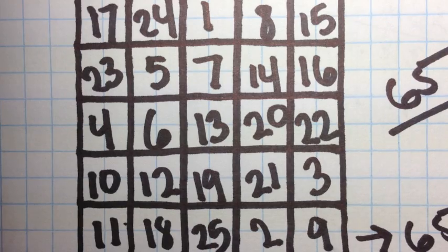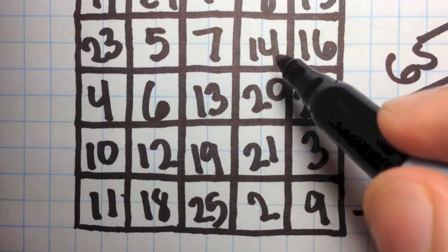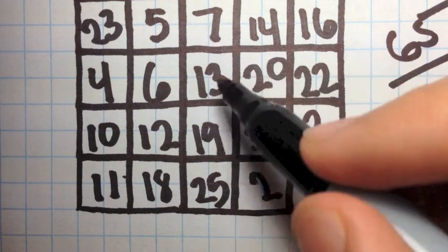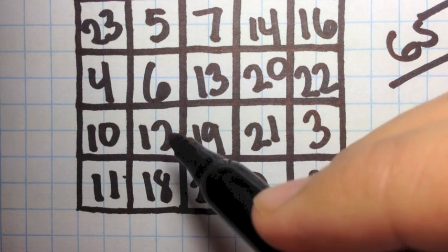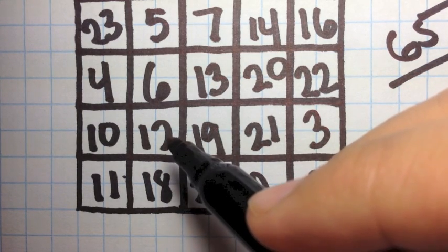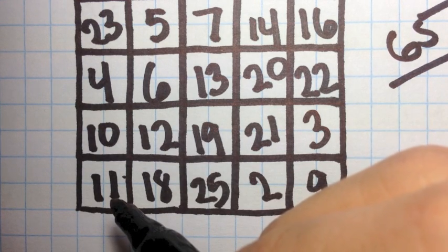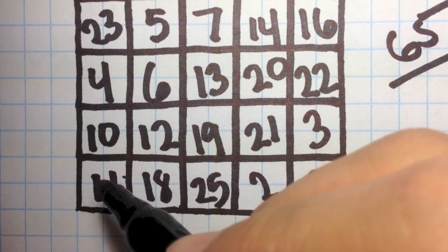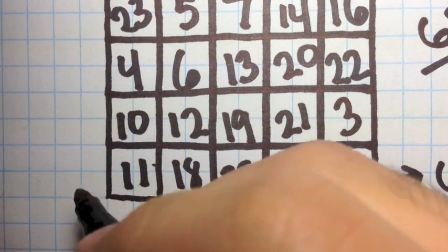Now let's try it with a diagonal. 15 plus 14 equals 29. 29 plus 3 equals 32. 32 plus 10 equals 42. 42 plus 2 equals 44. 44 plus 10 equals 54. 54 plus 1 equals 55. 55 plus 10 equals 65. So we get 65 here as well.